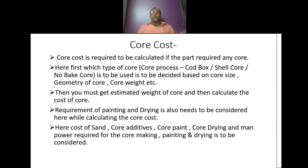Core cost is required to be calculated if the part requires any core. The type of core to be used has to be decided — whether it is a cold box core, shell core, or no-bake core — based mainly on core size, geometry, or core weight. You must estimate the weight of the core and calculate the core cost. Requirement of core painting and drying also needs to be considered.